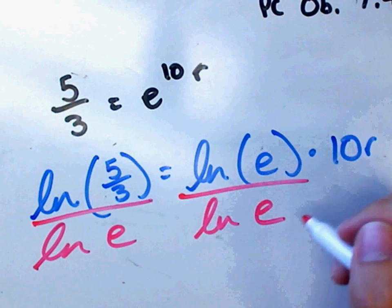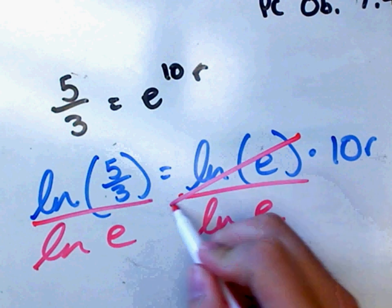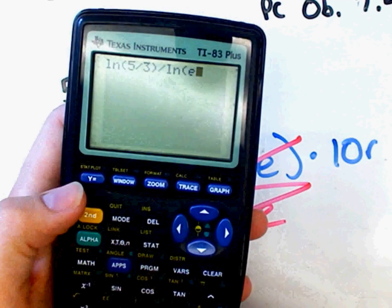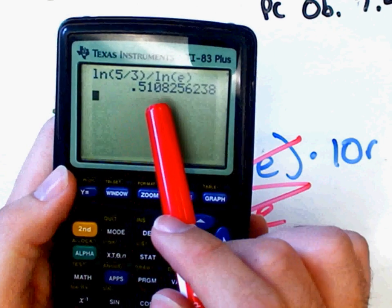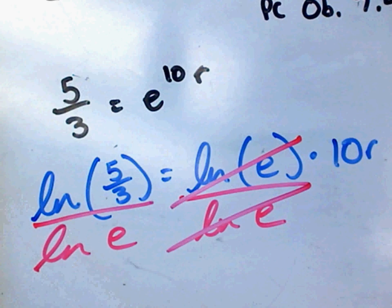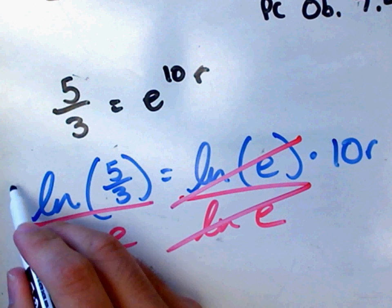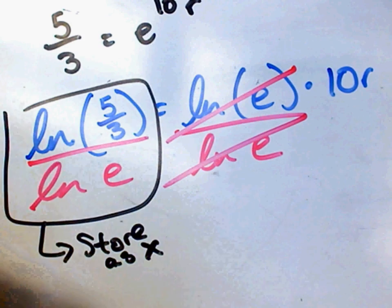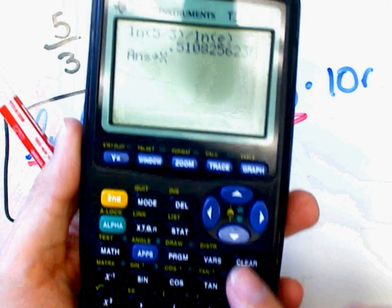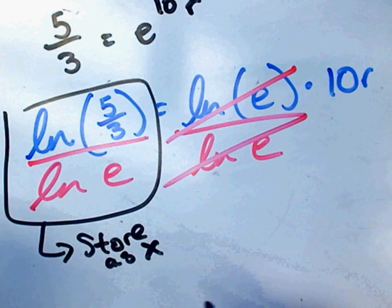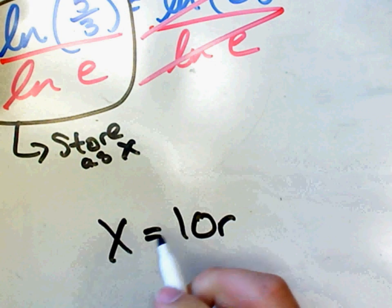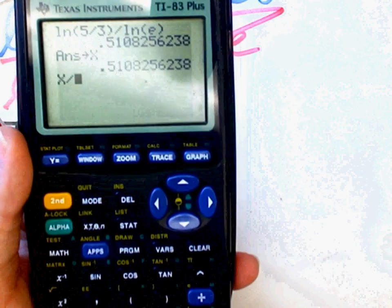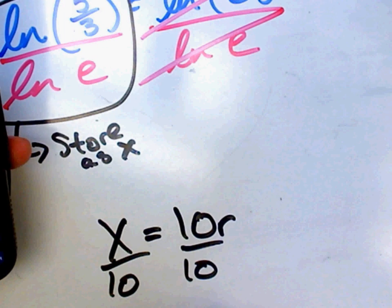If you prefer, you can use the log instead of the natural log. It doesn't really matter. These will cancel. So I'm going to say ln of 5 thirds divided by the ln of E, or E to the first, if you have to do that. You get it's about 0.5108256. I'm going to store that in my calculator. I'm just going to leave it on the screen. Let's just go ahead and store this as x. So on my calculator, I'll push the store button, or wherever that is. Member. Hit x. So it's stored. And now I'll have x equals 10R. And I just need to divide both sides by 10.